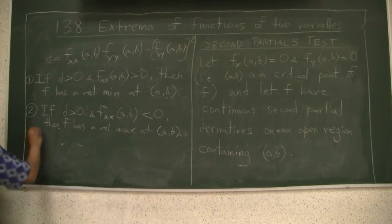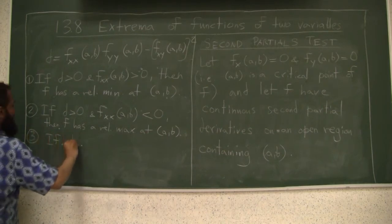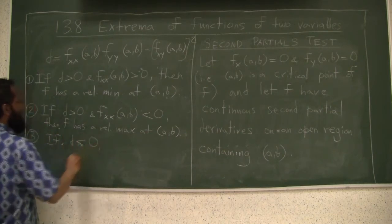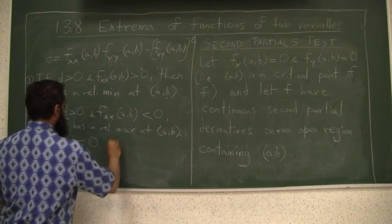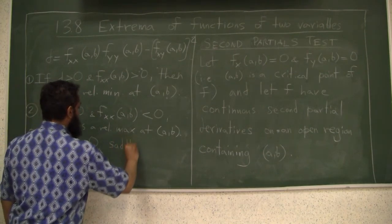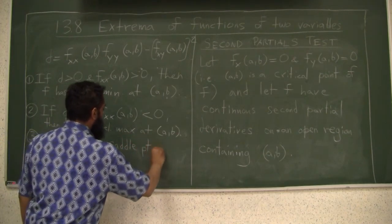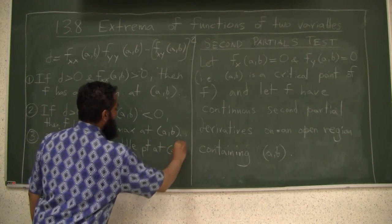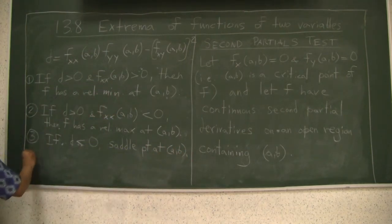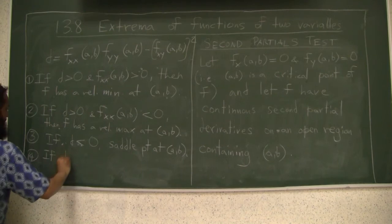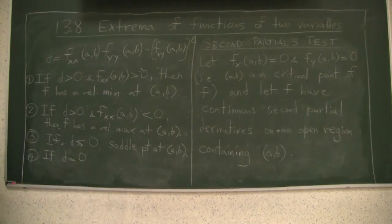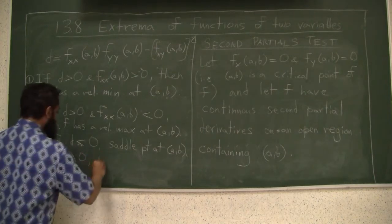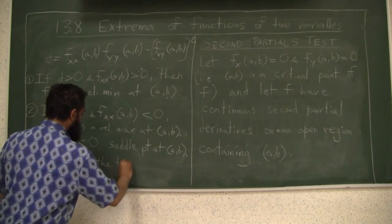Number three, if d is less than 0, then f has a saddle point at (a,b). And number four, if d equals 0, the test is inconclusive.